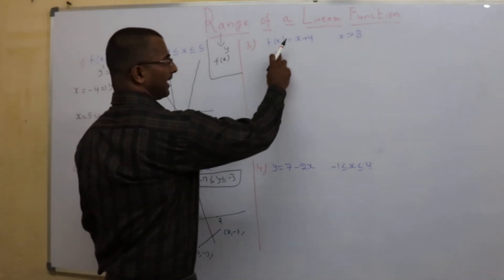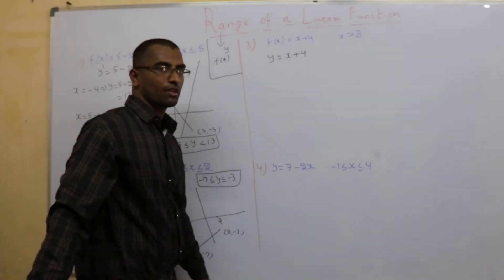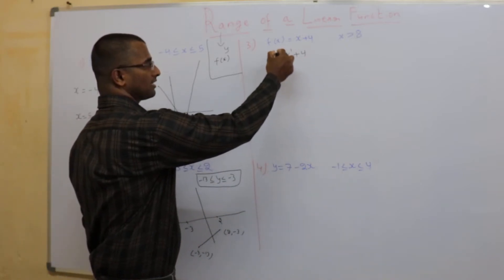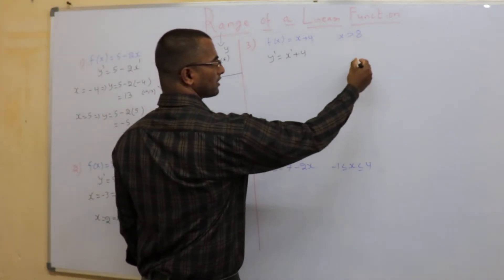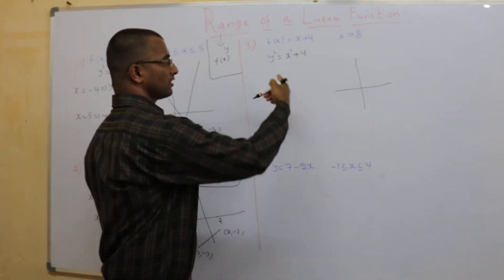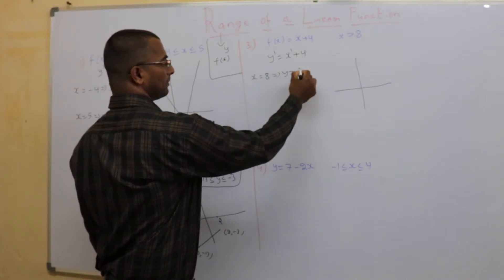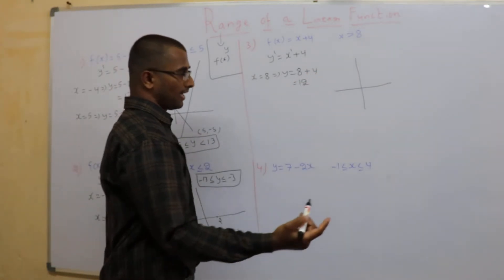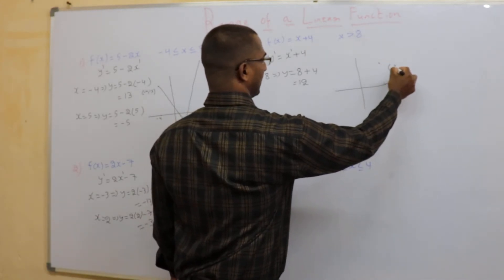One more example: f(x) = x + 4, or y = x + 4. First check whether it is a linear function — the power on x is 1, so it is a linear function and you get a straight line. Here the x values are greater than 8. So if I place x = 8, my y value will be 8 plus 4, which is 12. That means when x is 8, the point is (8, 12).